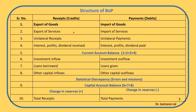Third is unilateral receipts and unilateral payments — also a very important item under the current account. This covers donations, gifts, or charity received from other countries or paid to other countries during times of need, calamities, or any problem a country is facing. Fourth is income in the form of interest, profits, and dividend received from other countries, and interest, profits, and dividend paid to other countries. These all form the current account balance.